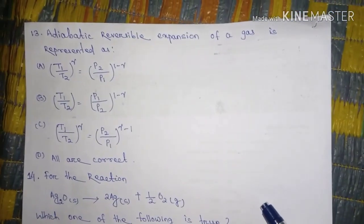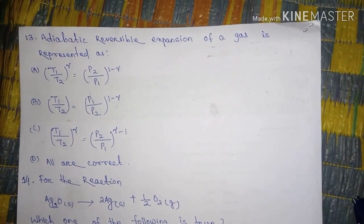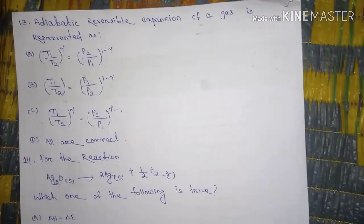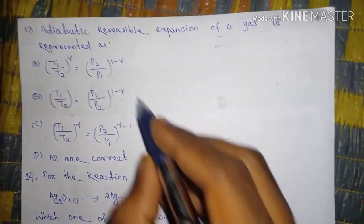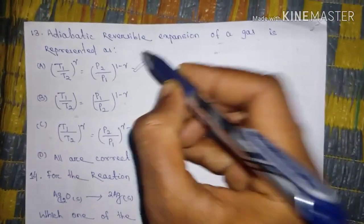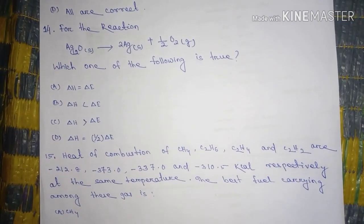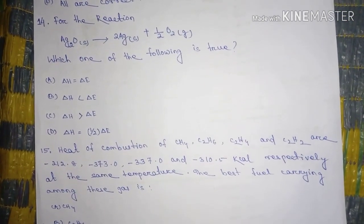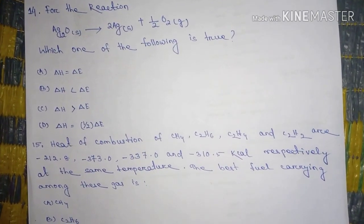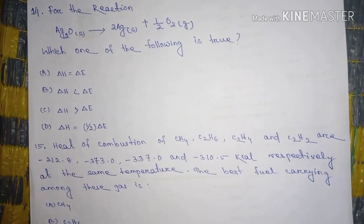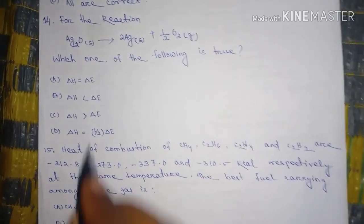Question number 13, adiabatic reversible expansion of a gas is represented as, the answer is A. Question number 14, for the reaction Ag2O solid gives 2 Ag solid plus half O2 gas, which one of the following is true? And the answer is delta H greater than delta E.